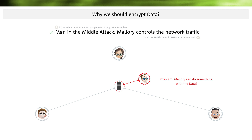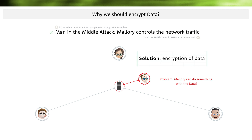Malorie can do something with the data. If Alice exchanges important information over a connection with Bob, then Malorie can analyze the data. For example, if Alice enters credentials, Malorie can capture and store them. Encrypting data can help here, of course. In TLS connections, for example, all data in an active connection is encrypted on the transport path between Alice and Bob.